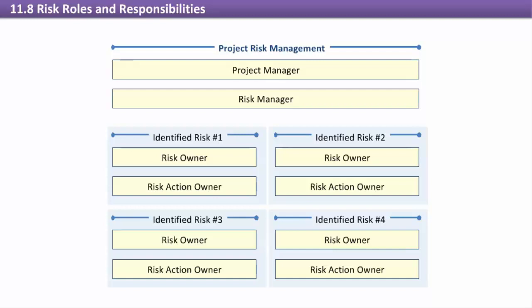Risk Action Owner, or Risk Response Owner, is the person responsible for carrying out risk response activities for a particular risk. The project manager is responsible for ensuring that risk management is properly carried out. The risk manager establishes the overall project risk management methodology and monitors and controls risks. Each individual risk has a risk owner who is responsible for managing that risk, and one or more risk action owners who will carry out risk response activity.